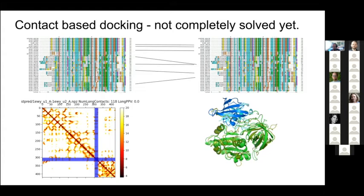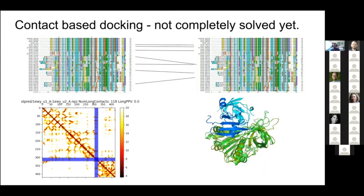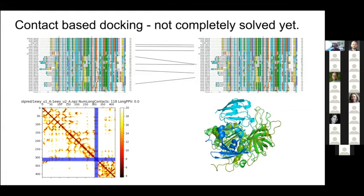If we can't use all the paralogues and only use one representative pair, we can still build the combined alignment and make this contact map prediction, and then predict the inter-chain contact maps.